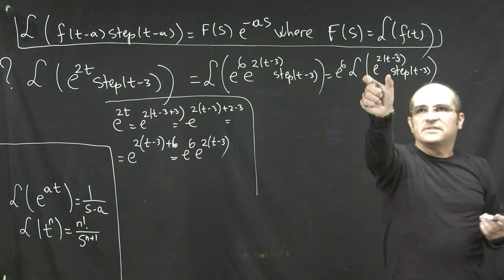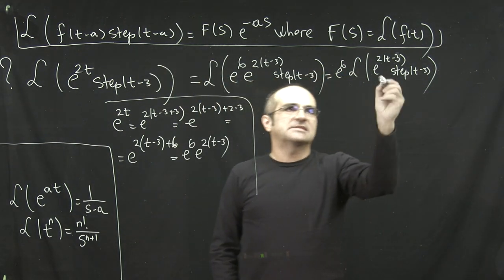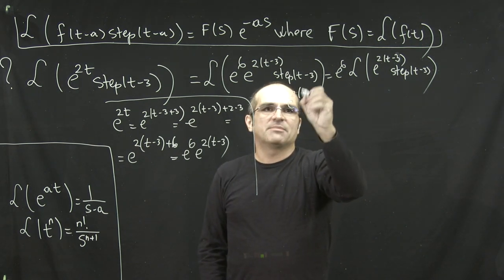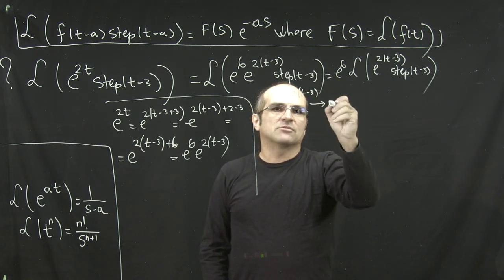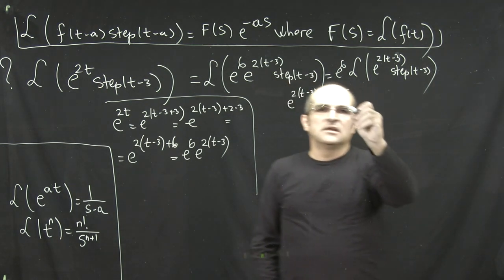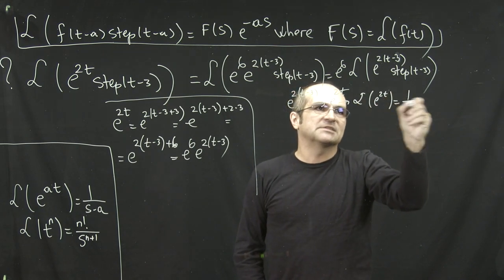Okay, so now this fits the framework f(t-a), so now we proceed with the delay theorem, which states that I'm going to take this function, multiply by the step function, I'm going to substitute t-3 with t, so that becomes e to the 2t, then I'm going to take the Laplace of e to the 2t, which is 1 over s minus 2.